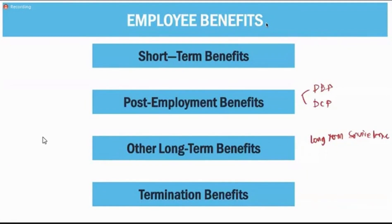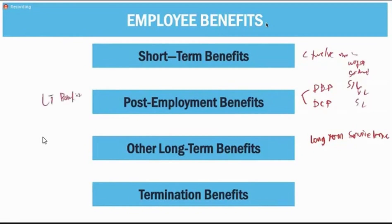Under PAS 19, employee benefits consist of: short-term benefits, which are less-than-12-month benefits such as wages, salaries, service incentive leave, vacation leave, and sick leave; post-employment benefits, which are generally long-term since they are given after employment — normally known as pensions; other long-term benefits, which are benefits other than post-employment; and termination benefits, which are given at the time of termination of the employer-employee relationship.